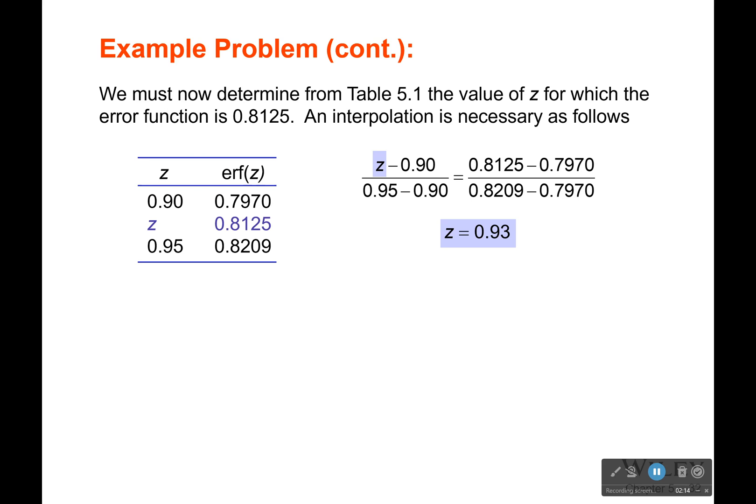If I look at my table, I'll find that z, erf z 0.8125 is going to be equal to this value. But wait a minute, that's just a z there. You can see that I have values of z at 0.9 and 0.95, and I've got erf z values at 0.797 and 0.8209. I don't have one for 0.8125.